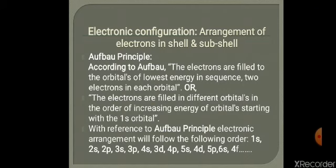In the last video we discussed that in the modern periodic table, elements are classified into four blocks: S, P, D, and F block. These blocks are on the basis of electronic configuration — which sub-shell the last electron of an element enters determines which block that element belongs to.